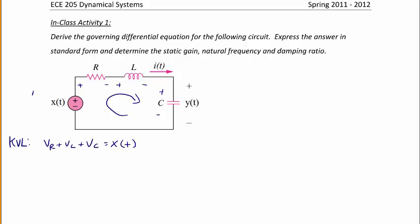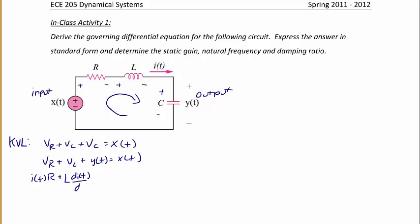The input is x of t and our output y of t is the voltage across the capacitor. Replacing that in our equation, we have VR plus VL plus y of t equals x of t. Using Ohm's law, the voltage across the resistor is I of t times R, and the voltage across the inductor is L di of t dt, giving us a first-order differential equation. We call this equation 1.